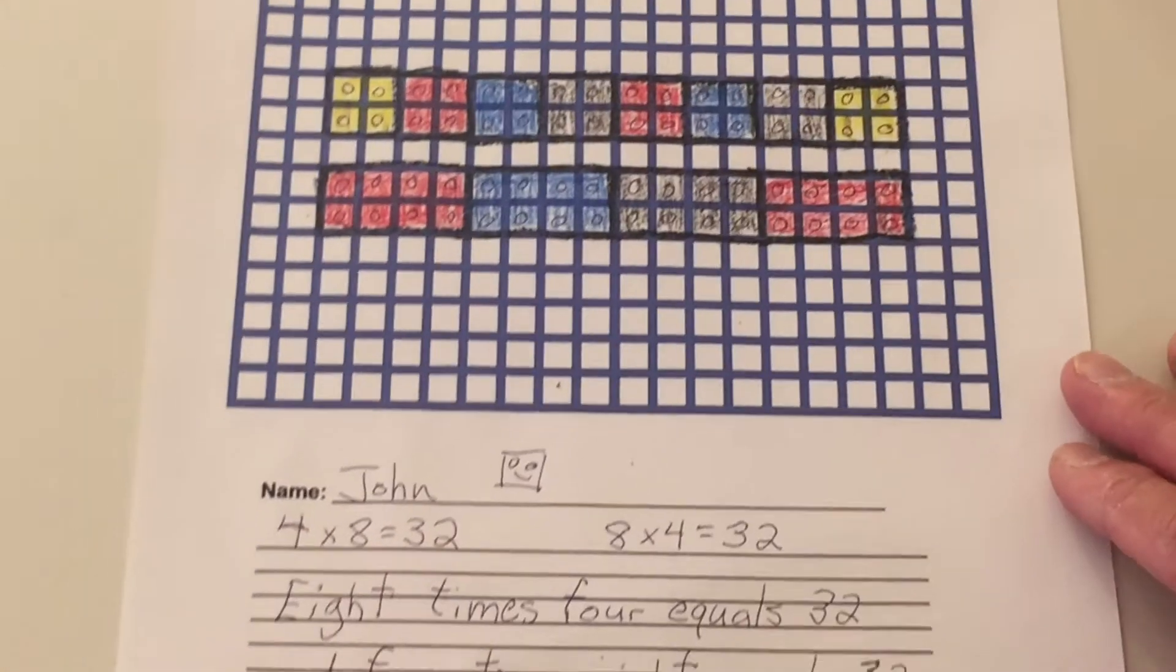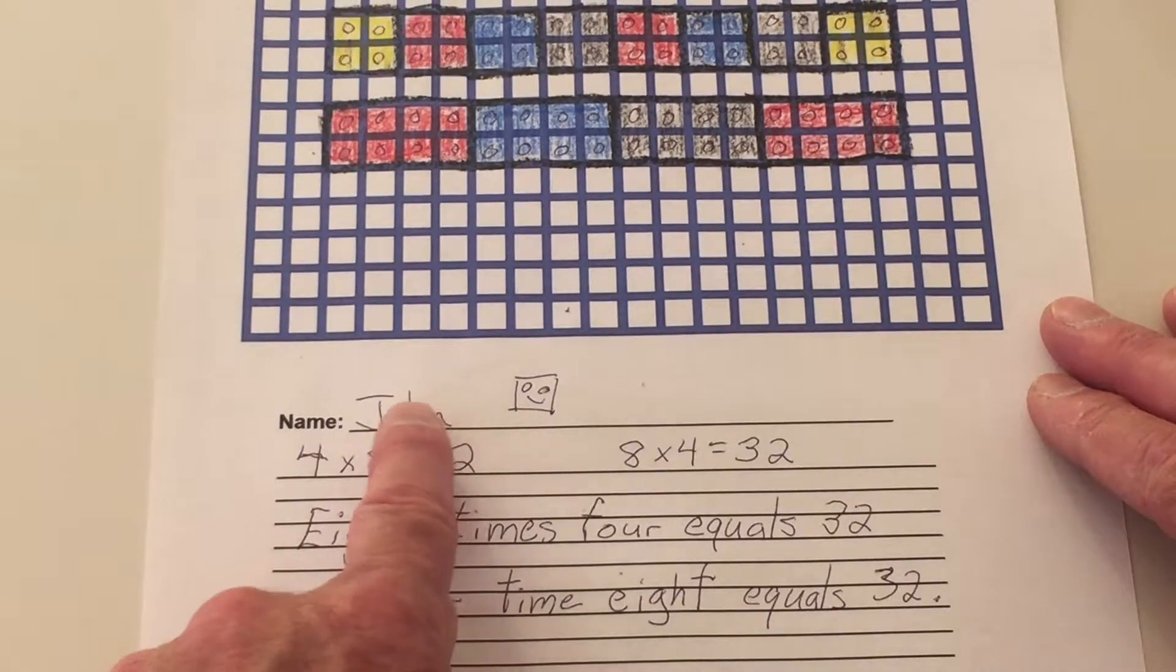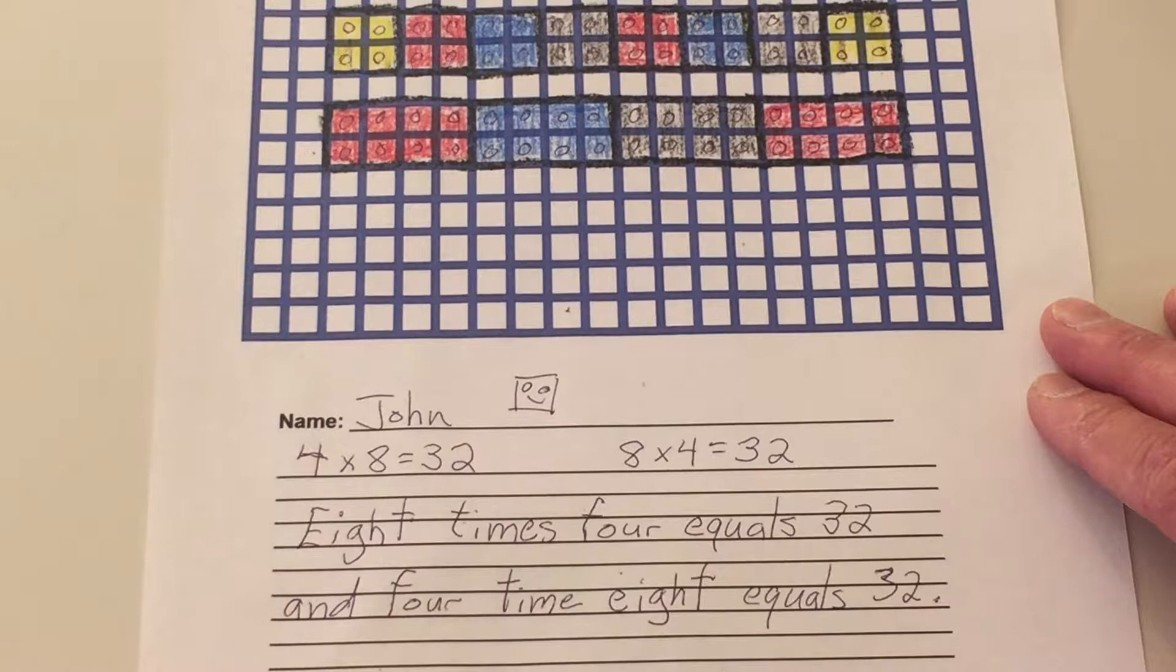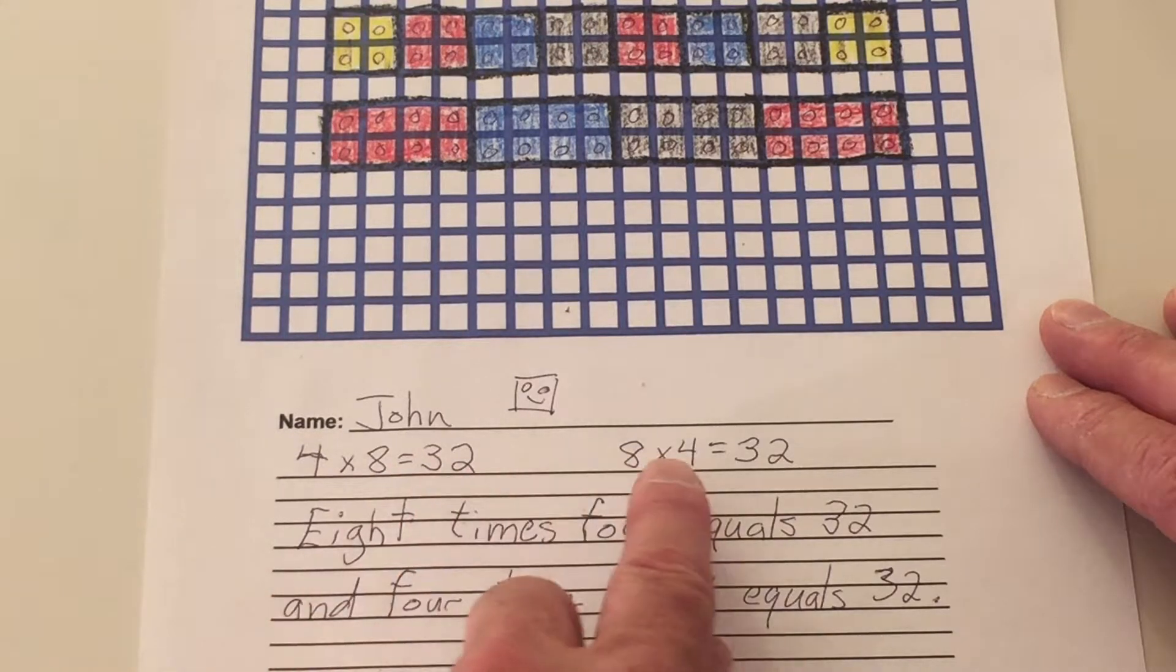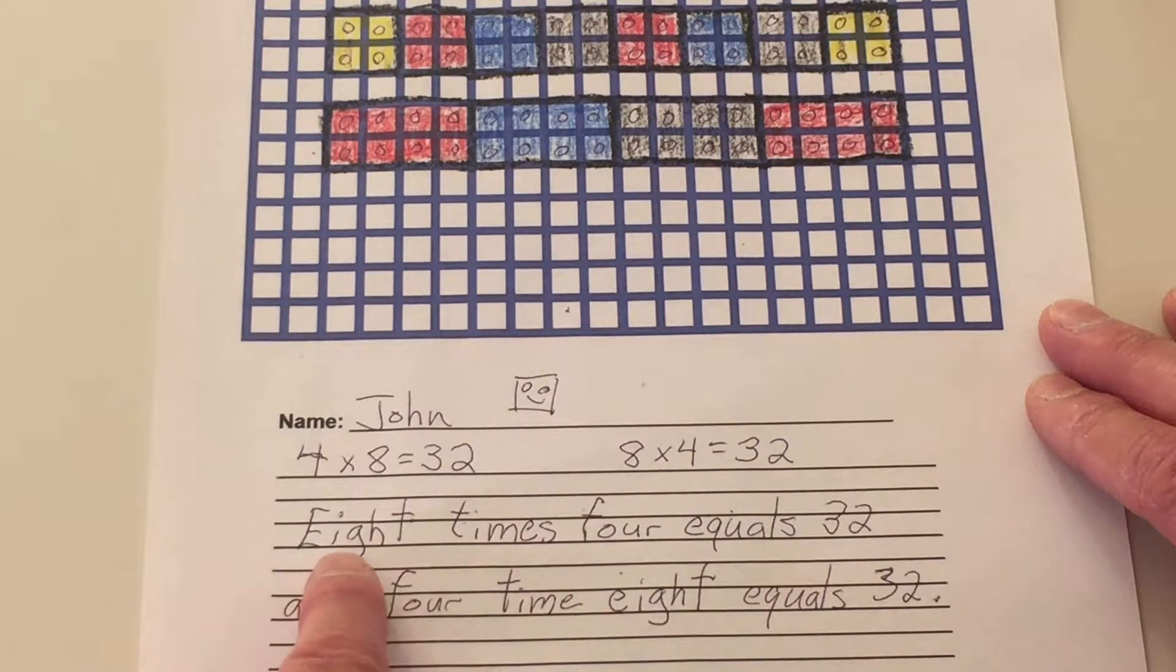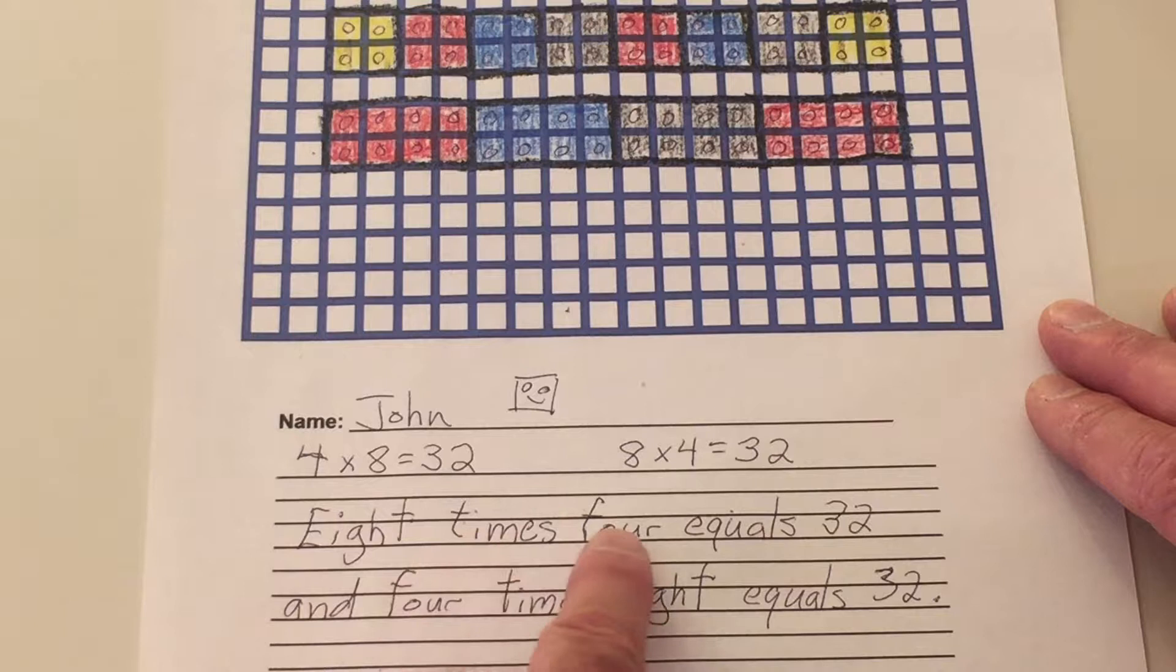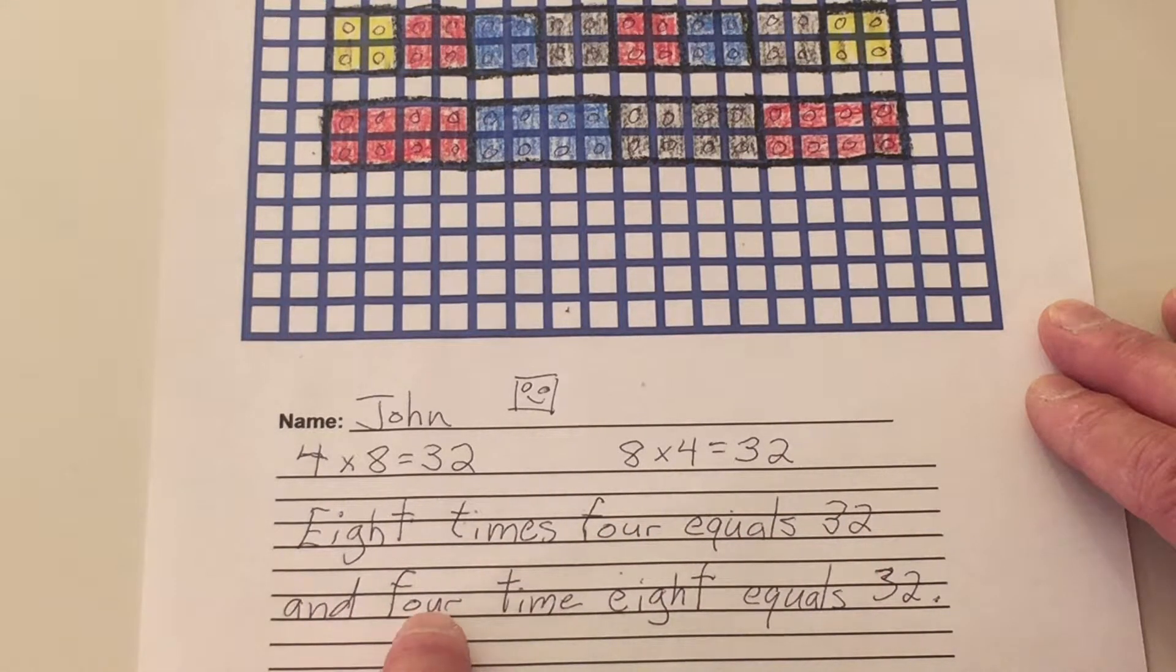And here's what we wrote. I put my name on the paper, John. And I made a little picture there. And I put down the problem that we did. Four times eight equals 32. And over here, I put eight times four equals 32. And then I wrote that out. Eight times four equals 32. And four times eight equals 32. Nice work.